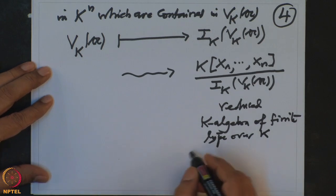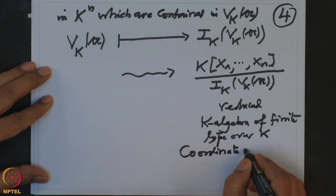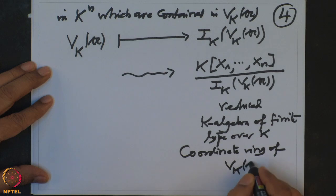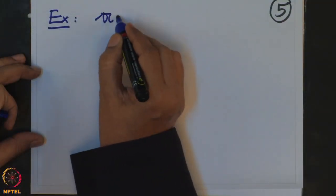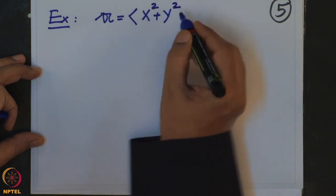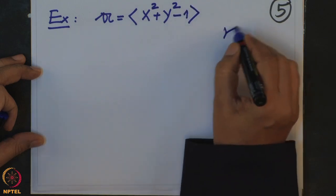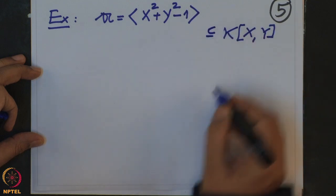This ring is called the coordinate ring of V_K. For example, if I take the ideal A generated by X² + Y² − 1, working in K[X,Y] in two variables, and take K = ℝ for drawing pictures, then V_R(A) is precisely the circle.